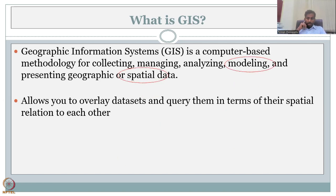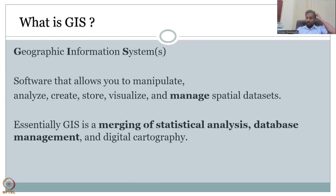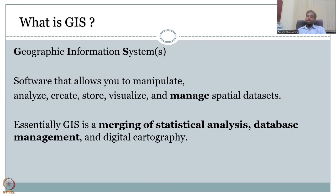The most important aspect is spatial data — modeling, analyzing, managing, etc. GIS is an information system which has geospatial information. As software, GIS lets you manipulate, convert, reformat, and manage spatial data. The word 'manage' is very important because data can be scattered in different locations, and to truncate it to one district or one zone, you need to manage it — and that management can happen in GIS.